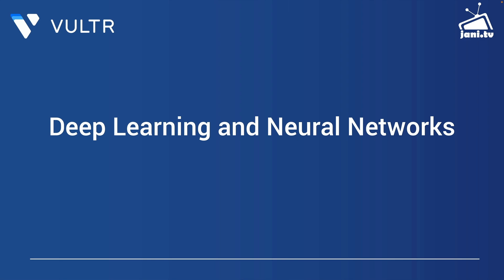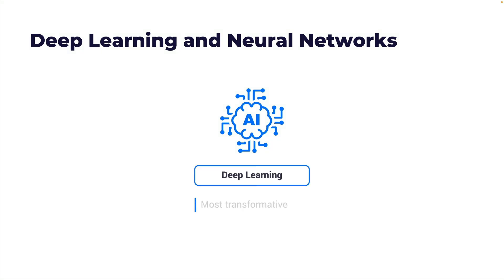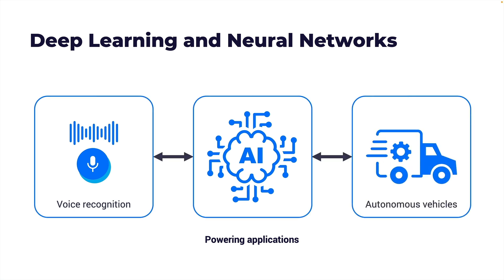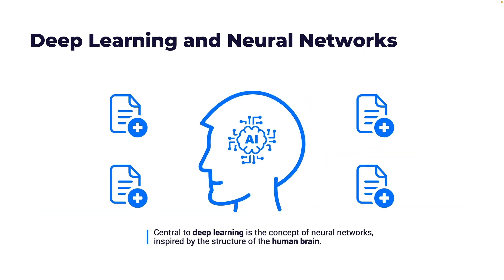Now let's take a look at deep learning and neural networks. Deep learning is one of the most transformative and influential subsets in AI, powering applications from voice recognition to autonomous vehicles, offering capabilities once thought to be exclusive to human cognition. Deep learning is a subset of machine learning that employs neural networks with many layers. These networks can learn and make independent decisions by analyzing vast amounts of data and identifying patterns. Central to deep learning is the concept of neural networks, highly inspired by the structure of a human brain.